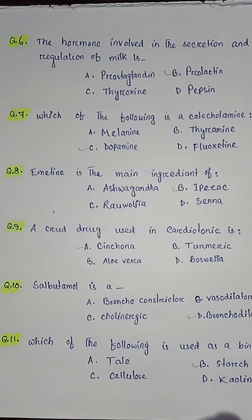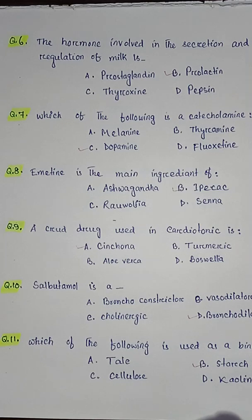Question number six: the hormone involved in the secretion and regulation of milk is — option A prostaglandin, option B prolactin, option C thyroxine, option D pepsin. So the correct answer is option B prolactin.